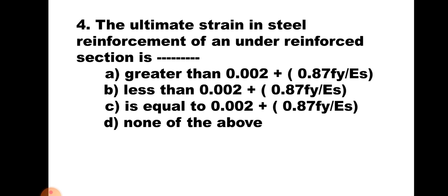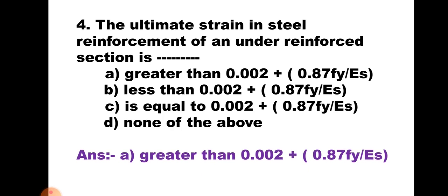Question number 4: The ultimate strain in steel reinforcement of an under-reinforced section is: A. Greater than 0.002 + 0.87FY/ES, B. Less than 0.002 + 0.87FY/ES, C. Equal to 0.002 + 0.87FY/ES, D. None of the above. The ultimate strain in steel shall not be less than 0.002 + 0.87FY/ES. For under-reinforced sections, as the strain in steel reaches earlier, it is greater than that value. Hence, the correct answer is A.